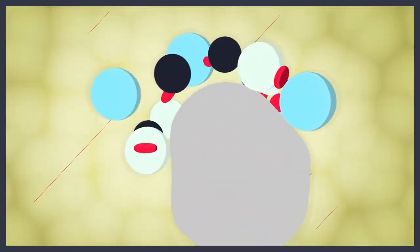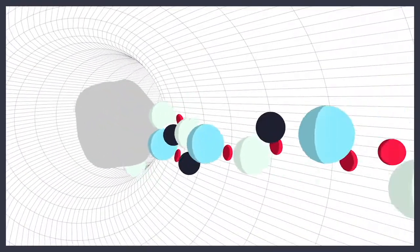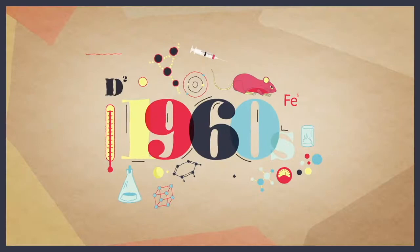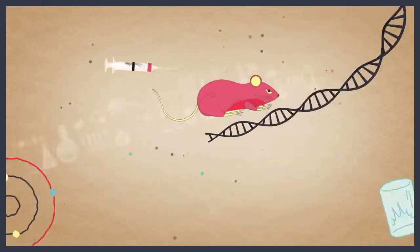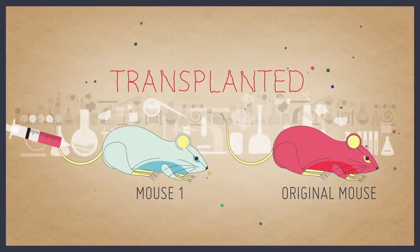Bone marrow contains many different types of cells, several of which have specialized roles in the blood. In the early 1960s, it was shown that if bone marrow was taken from one mouse and transplanted into another,